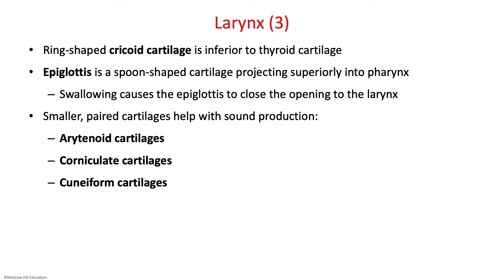There's a ring-shaped cricoid cartilage right below your thyroid cartilage. The epiglottis is the spoon-shaped cartilage projecting superiorly — when you swallow, it closes over the larynx so food does not go down your trachea. There are other small paired cartilages to help with sound production. The cartilages you need to be familiar with are the cricoid, thyroid, and arytenoid cartilage.